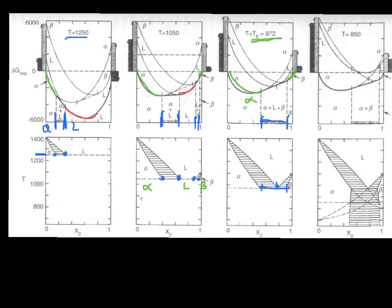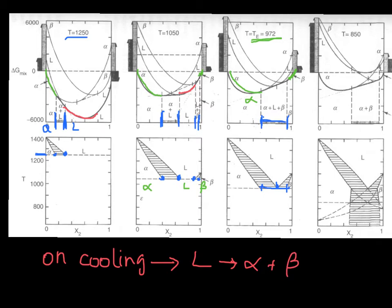One of the trademarks of a eutectic is that on cooling, we can go directly from the liquid phase to the alpha plus beta phases. Instead, if we're cooling off to the side, we go from liquid to liquid plus alpha and then to alpha, so the liquid slowly disappears. At the eutectic composition, the liquid goes directly into the solid phases.